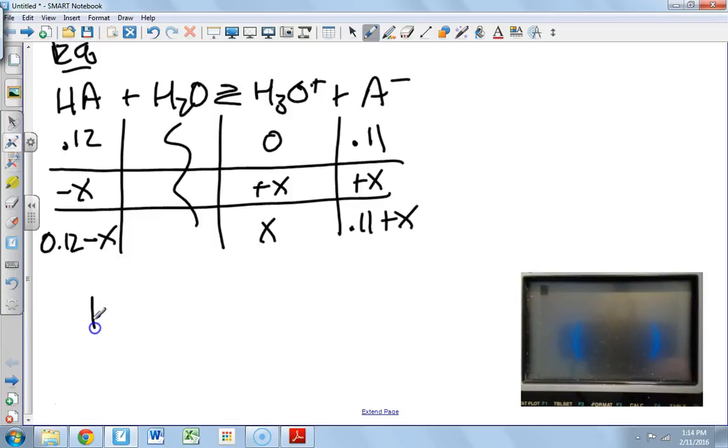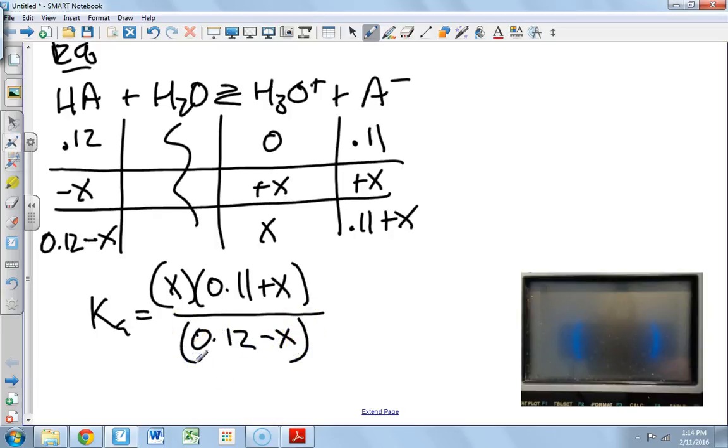So now we know that Ka equals the products over the reactants. The products x times 0.11 plus x all over 0.12 minus x, and that is equal to 1.38 times 10 to the minus 4.